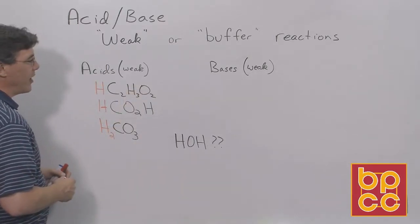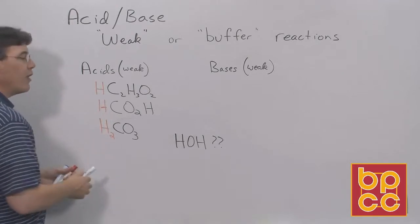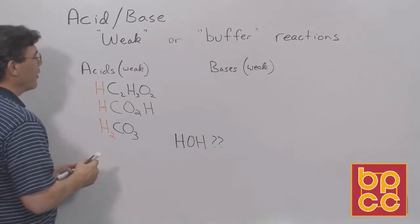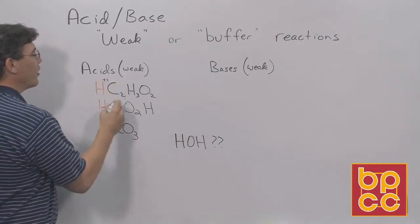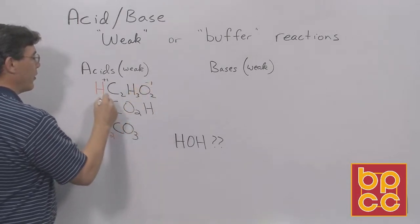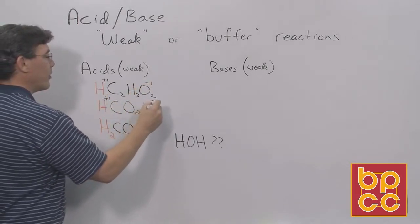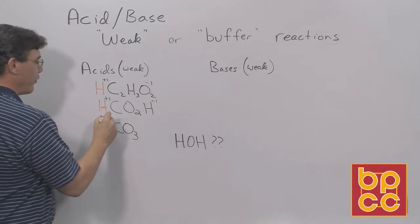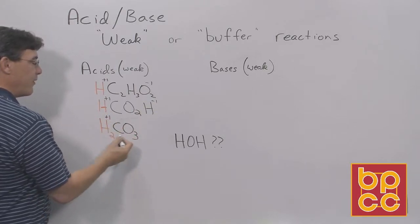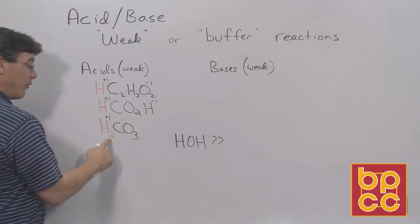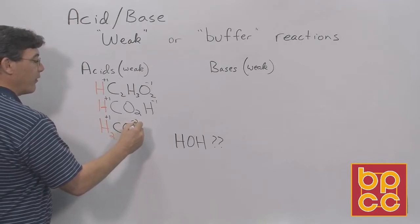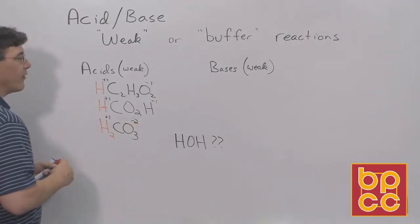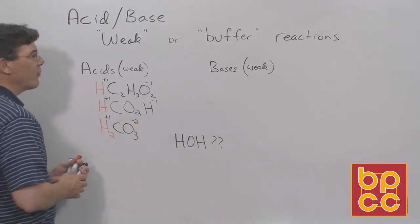So in general, our acids still look pretty much the same. They begin with an H, they're still ionic in nature, so we still have the plus one charge here and a minus one charge here. Plus one charge on the hydrogen, minus one charge here. And because there's two hydrogens in carbonic acid, this has a minus two charge, that's why the formula is as such.